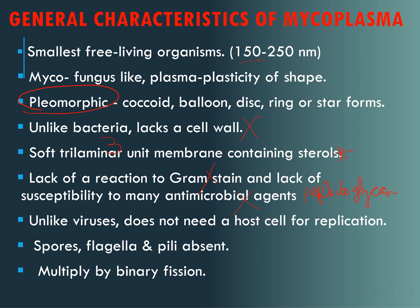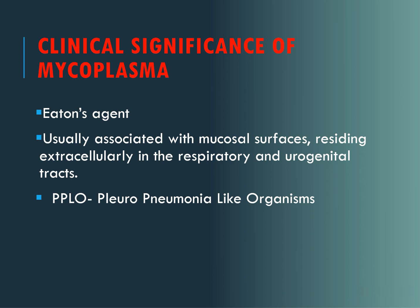They are different from viruses because they do not need a host cell for replication. Spores, flagella and pili are absent in mycoplasma. They multiply by binary fission. Clinically, they cause pneumonia and hence are also called PPLO, which stands for pleuro-pneumonia-like organism, commonly called the Eaton's agent because it was discovered by Eaton.